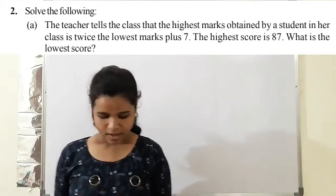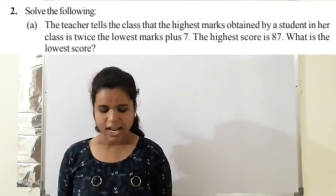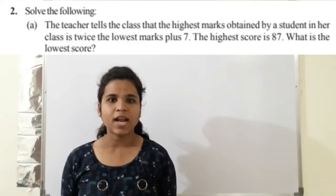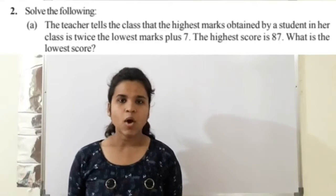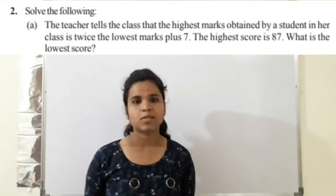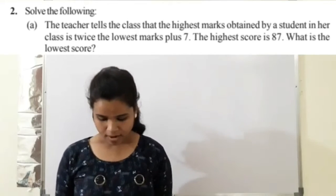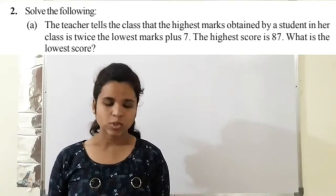So read question number 2 very carefully. Solve the following part A. The teacher tells the class that the highest marks obtained by a student in her class is twice the lowest marks plus 7. The highest score is 87. What is the lowest score?